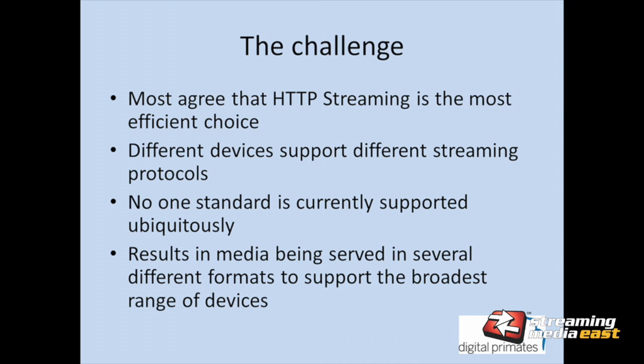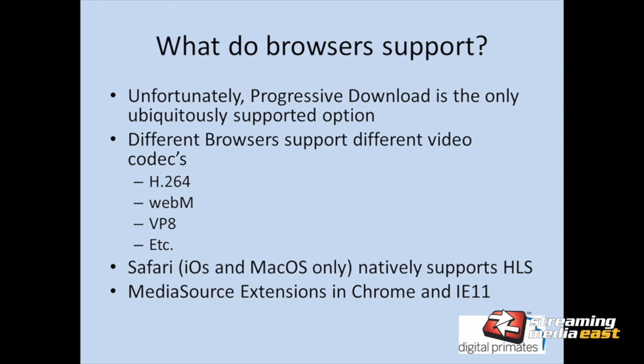Progressive download is the only option ubiquitously supported — everyone supports it. There are some variations in what codecs different browsers support. Cisco announced earlier this year they would pay for the H.264 licensing for all browsers, which was a huge leap forward. Before that, many browsers only supported WebM and VP8. New standards like VP9 and H.265 are also coming out, and support varies widely — especially across mobile devices, connected TVs, and set-top boxes.